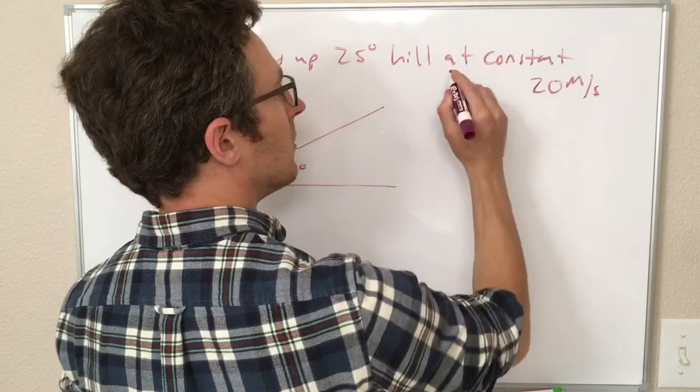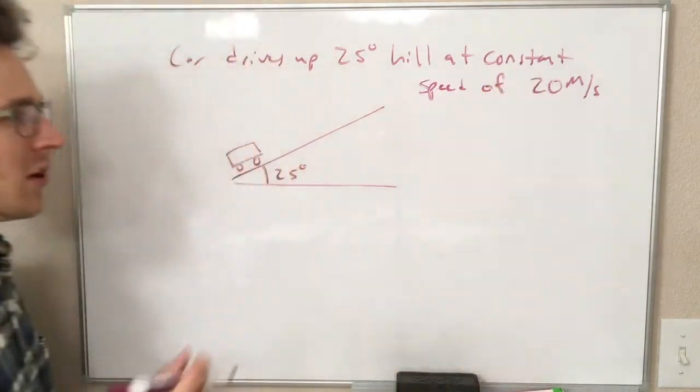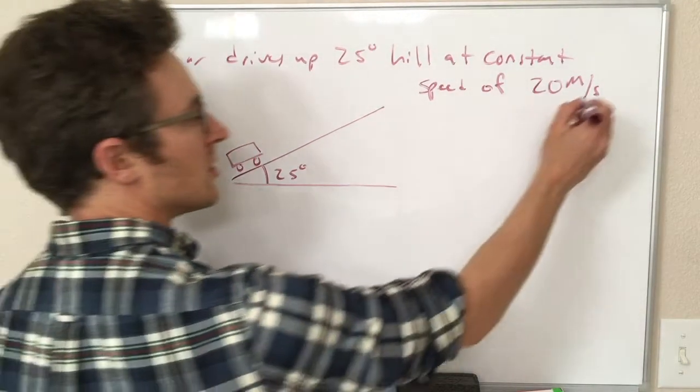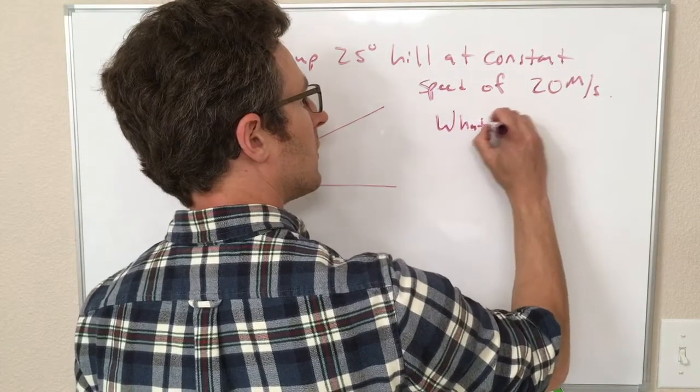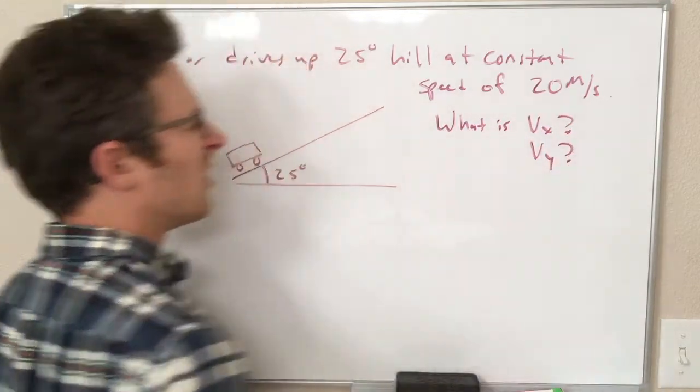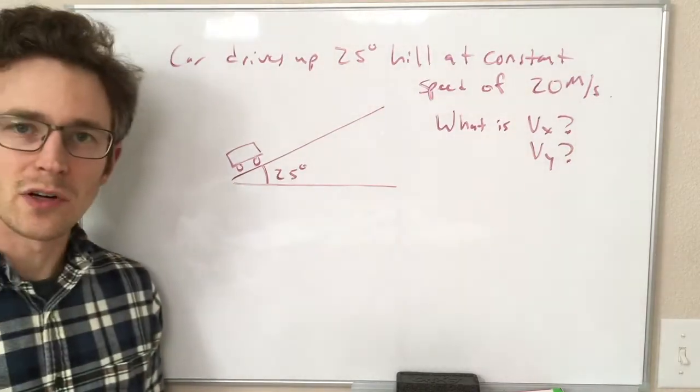Or maybe we should say speed, since speed is the magnitude of our velocity. So at a constant speed of 20 meters per second, the question is what is Vx and what is Vy? What are the x and y components of our velocity?